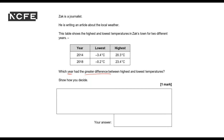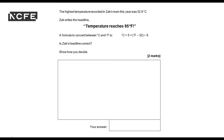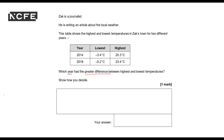Let's look at 2014. It's the difference between minus 3.4 and 20.3. If I was going to draw that on a number line, with 0 here and 20.3 here, what I need to do is add 20.3 to the 3.4. Even though I've got a negative number, I can actually do quite a straightforward calculation.